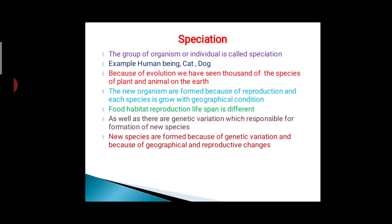Now we are going to learn about speciation. A group of organisms or individuals of the same kind is called a species. Examples include human beings, cats, and dogs. Because of evolution, we have seen thousands of species of plants and animals on the earth. New organisms are formed because of reproduction, and species grow with geographical conditions. Food habits, reproduction, and life span differ among different animals and plants. There are genetic variations which are responsible for the formation of new species.